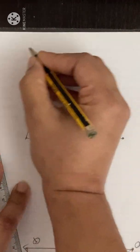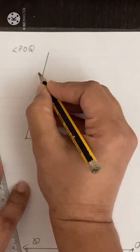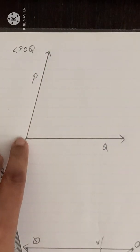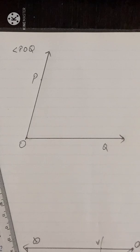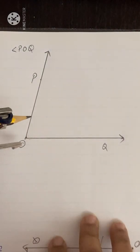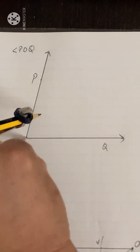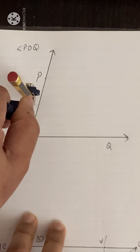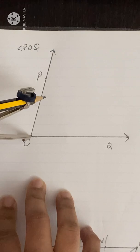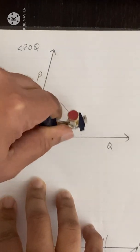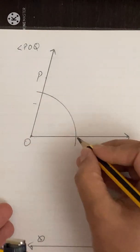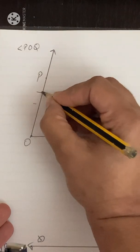We can name our angle as angle POQ. Now we have to construct the axis of symmetry. The line of symmetry is the same as the bisector. With O as center, take a convenient radius with the compass and draw an arc such that two points are cut on OQ and OP. This is the first point and this is the second point.